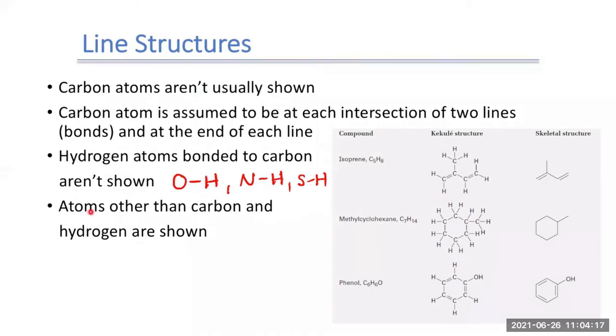Other atoms besides carbon and hydrogen, we do show. So if we have an oxygen, a nitrogen, sulfur, fluorine, chlorine, or bromine, or iodide, we'll add that in there. We would show these atoms. So we'll say draw the atom. But if it's a C or H, we don't draw it.